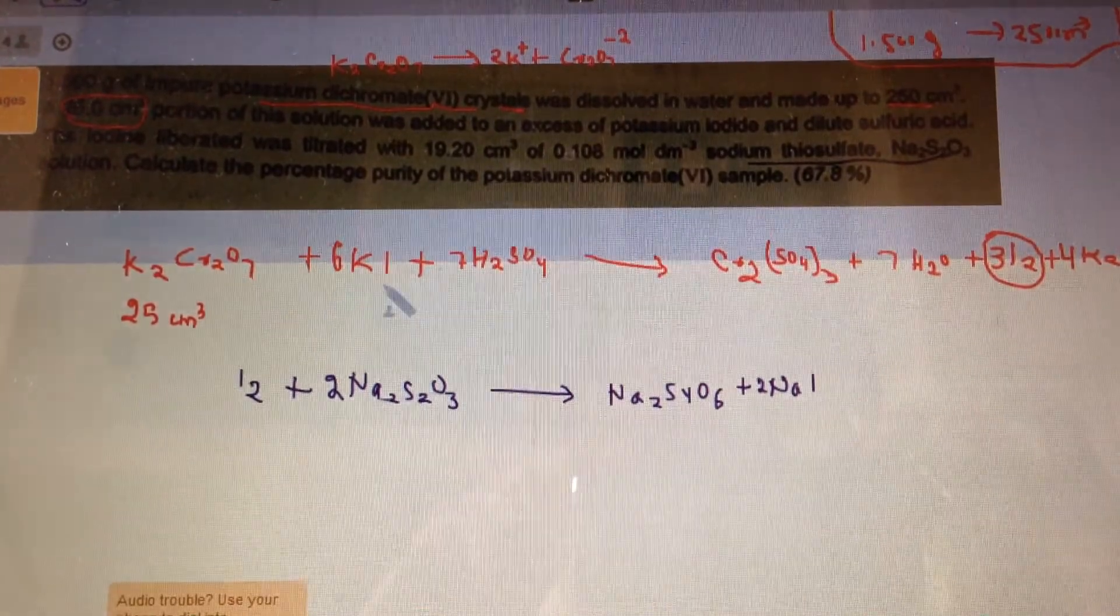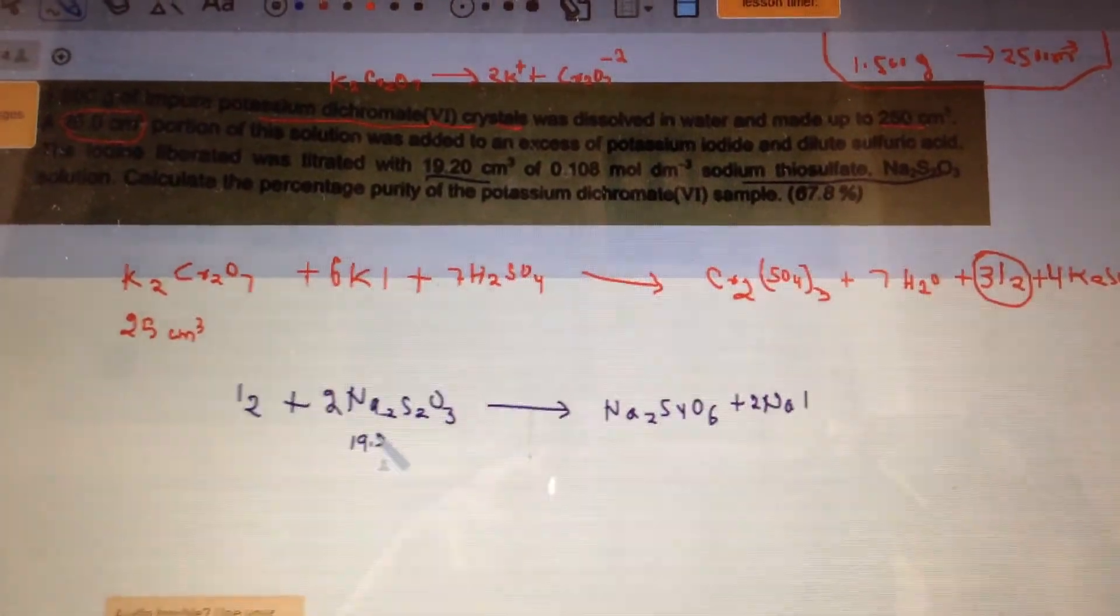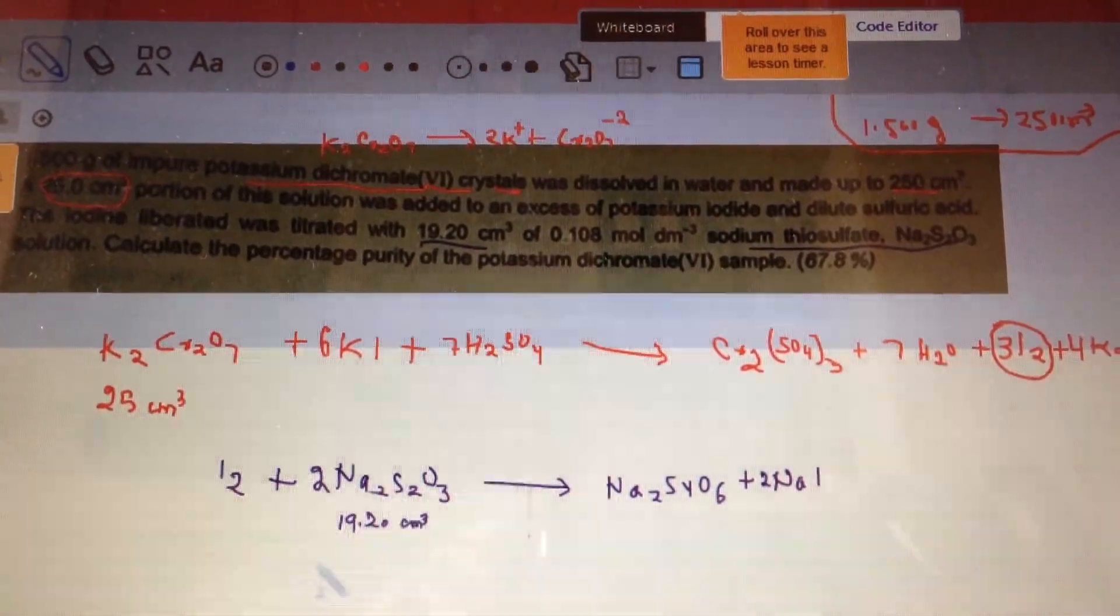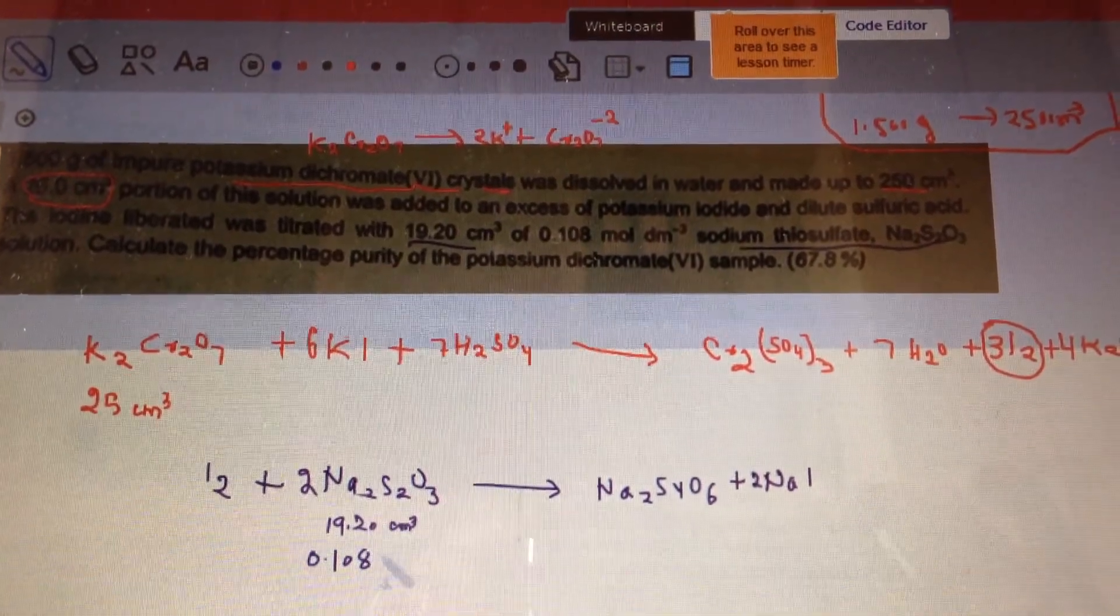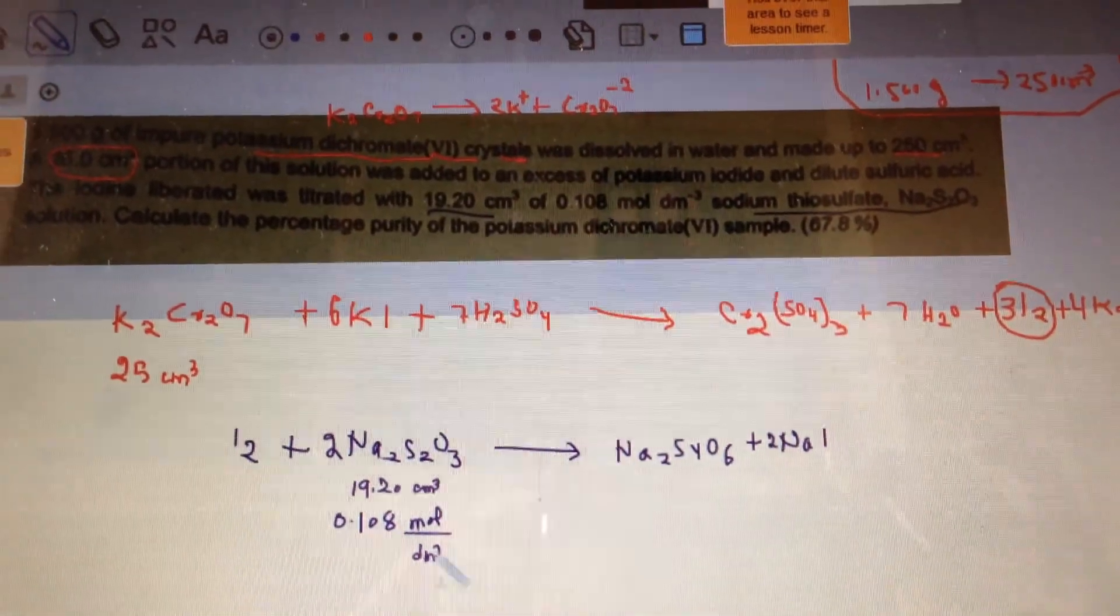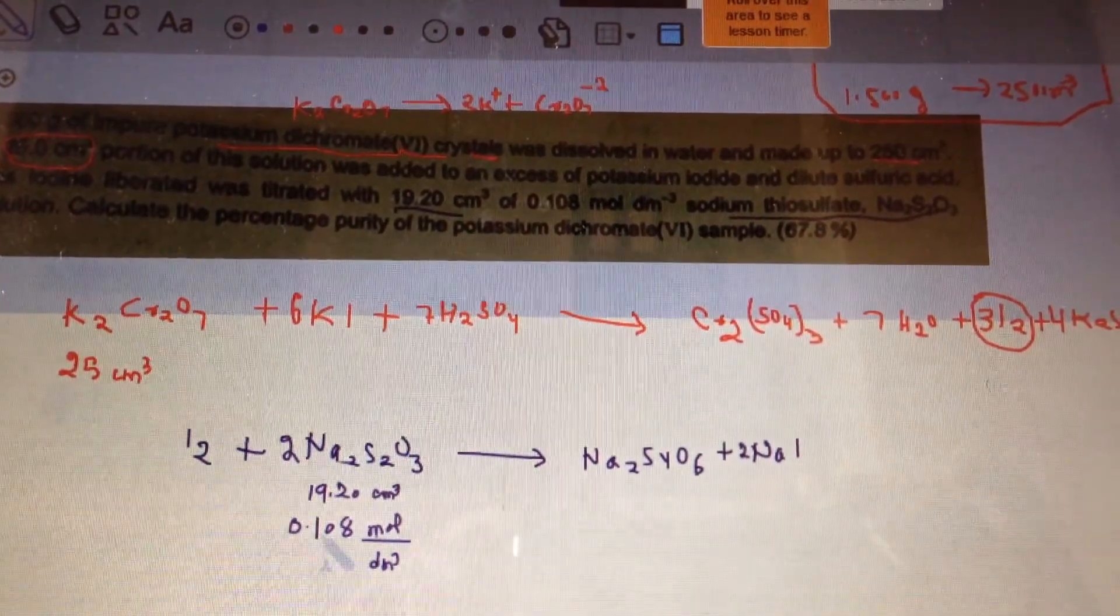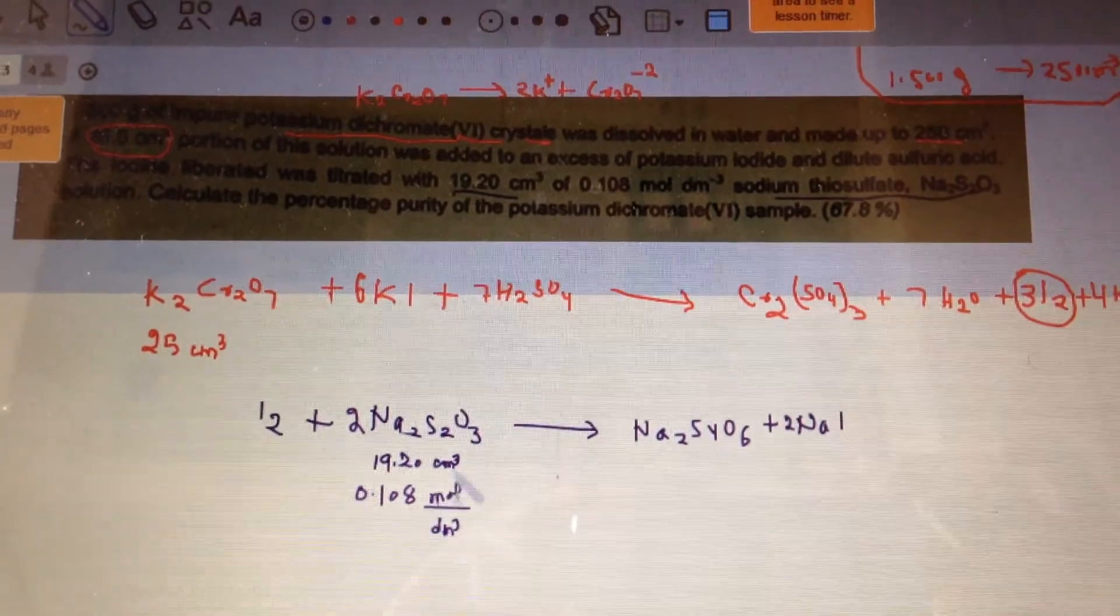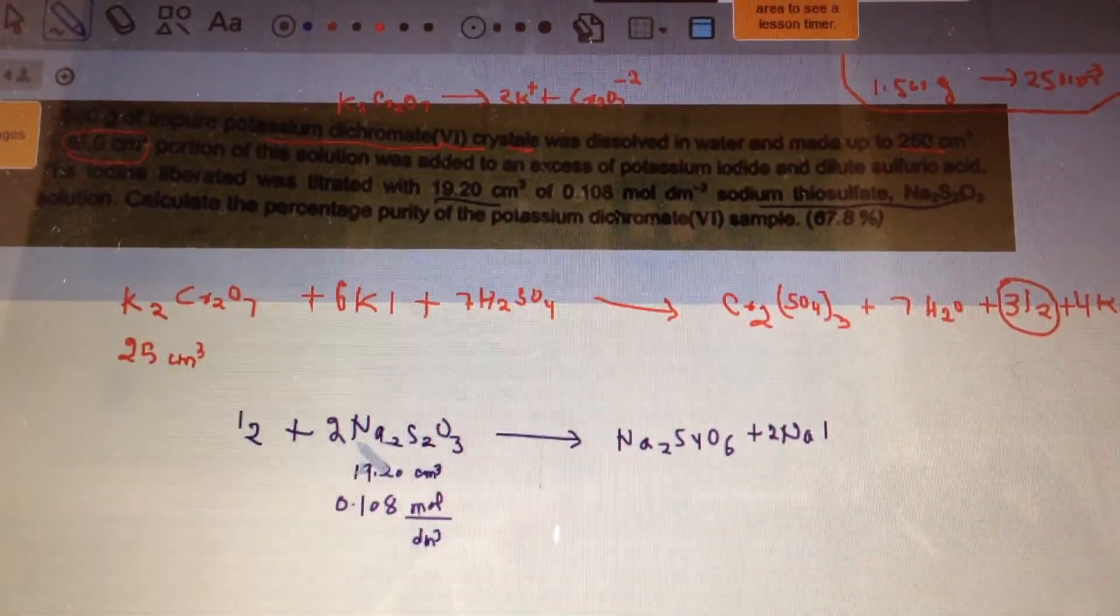And they also said they were titrated with 19.20 centimeter cubed of Na2S2O3, and the molarity of that compound was 0.108 moles over DM cubed. Now one trick here is the concentration, which is 0.108, is given in moles over DM cubed, and the volume is given in centimeter cubed. So we need to make sure we have the same units in order to calculate the moles of Na2S2O3.